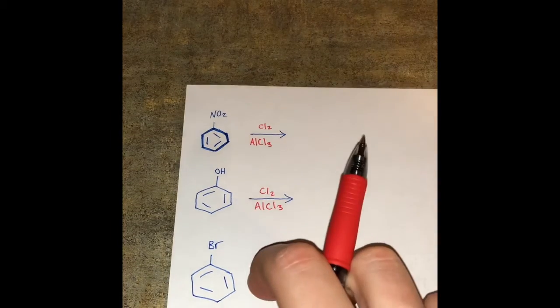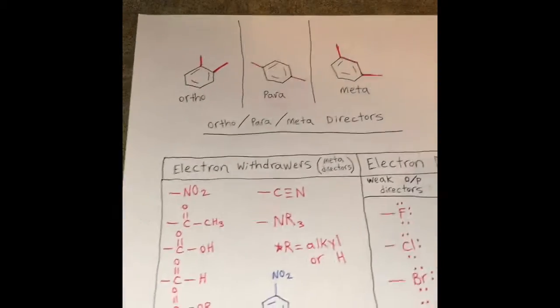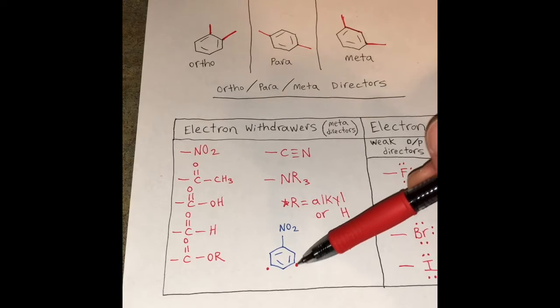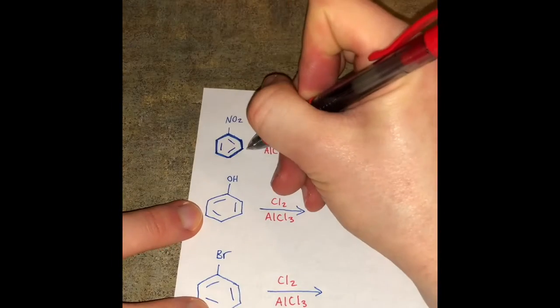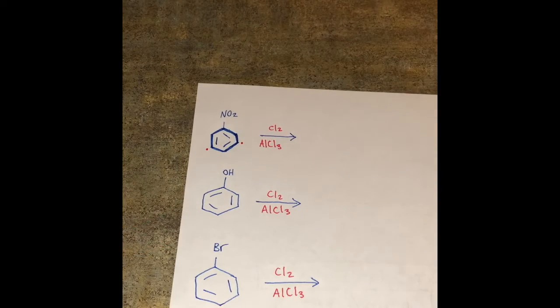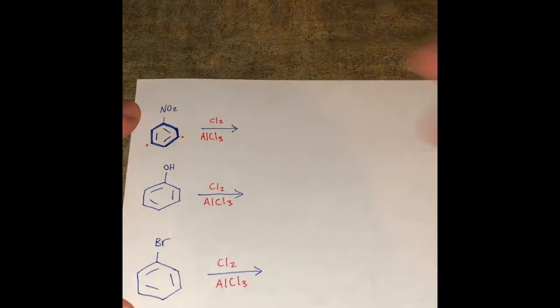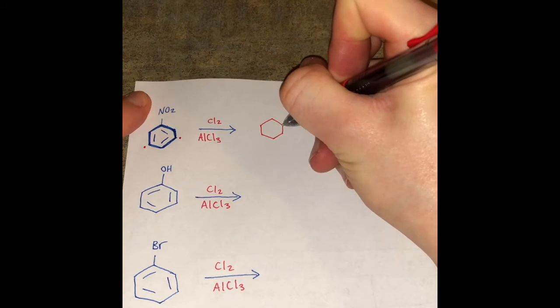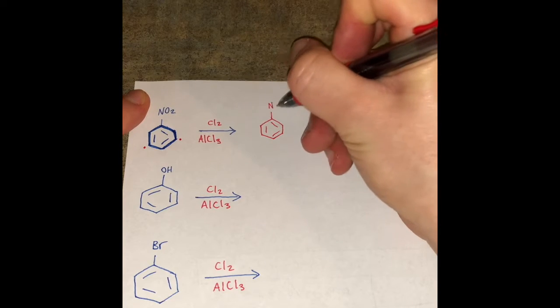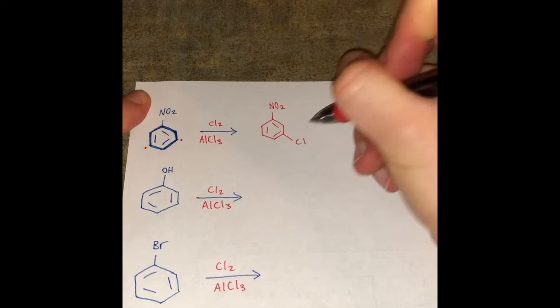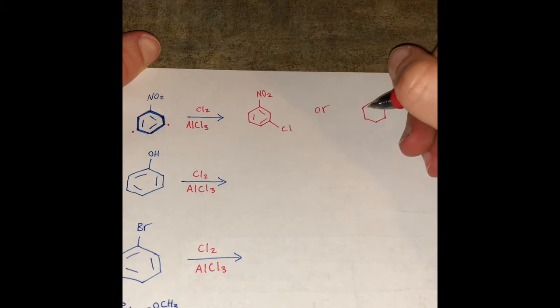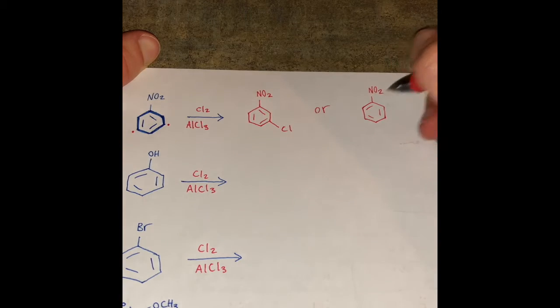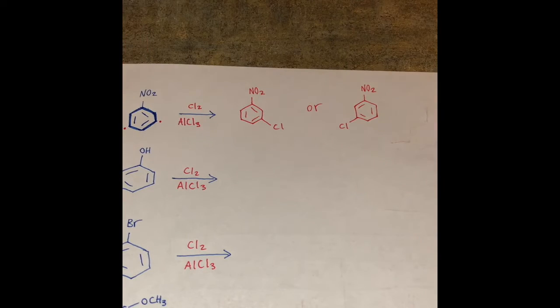So we just said it's a meta director, it's an electron withdrawer. So if we look at this example we have here we can add at this bottom right position or the bottom left position. So I like to put those dots on my structure so I remember where I can add in my substituent. And then the potential products we get are either one of those. So both structures have the Cl being added at the meta position.